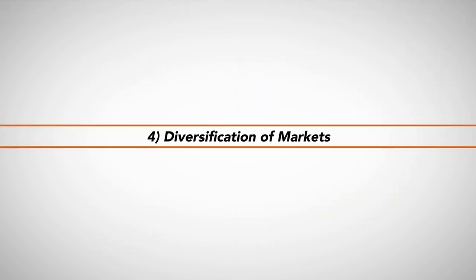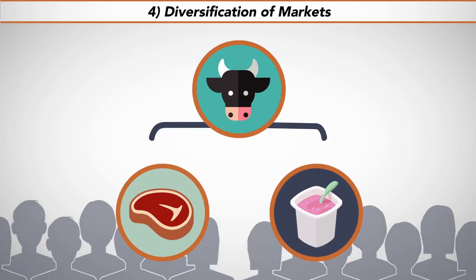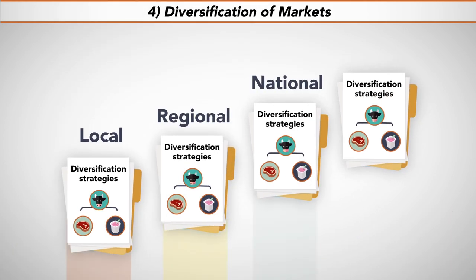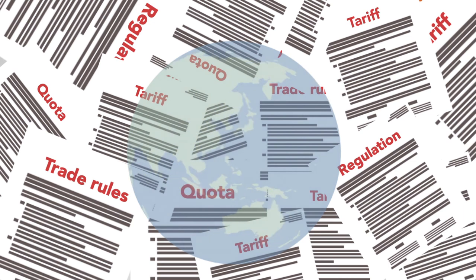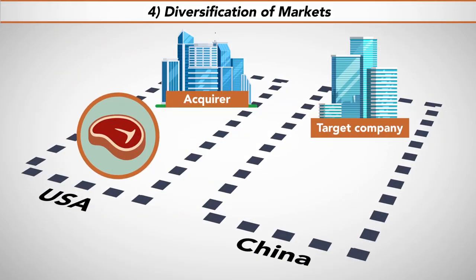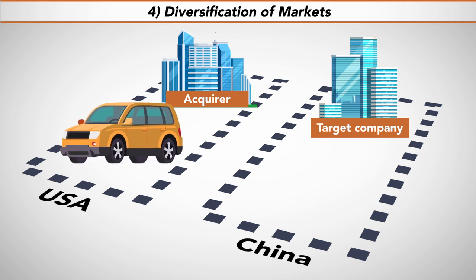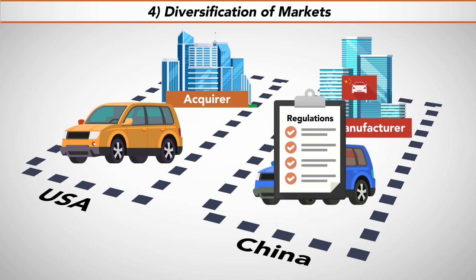Four: diversification of markets. A company may seek market diversification to market an existing product line to new customers. While product diversification strategies are available on local, regional, national, or international levels, in a world of complex international trade rules filled with tariffs, quotas, and content regulations, companies may avoid trade restrictions by producing their products within the borders of countries previously reached only via exports from the U.S. For example, an American exporter of cars to China may decide to acquire a Chinese car manufacturer and work to ensure its products meet the company's specifications and are manufactured in China rather than continuing to export from the United States.